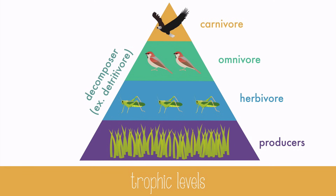An omnivore will eat producers and consumers, like a bird that eats seeds and insects. Carnivores eat other consumers, and decomposers will break down all dead organisms from every part of the food chain, which is why it's written on the side of this diagram. Detritivores are a specific type of decomposer which feeds on detritus, which is fecal matter or decomposing organic matter.